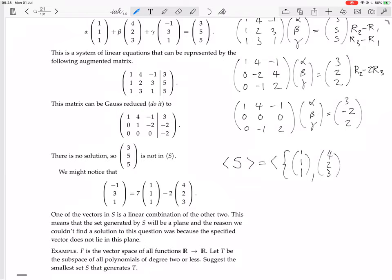But the set generated by S could also be generated by just having only two of those vectors, (1, 1, 1) and (4, 2, 3), because that third vector, (−1, 3, 1), is actually a linear combination of the other two vectors.